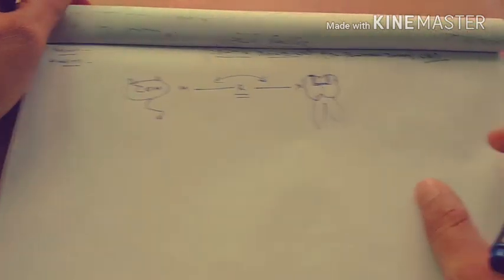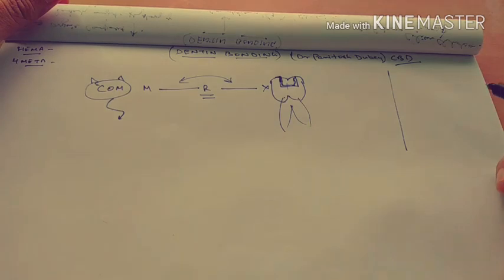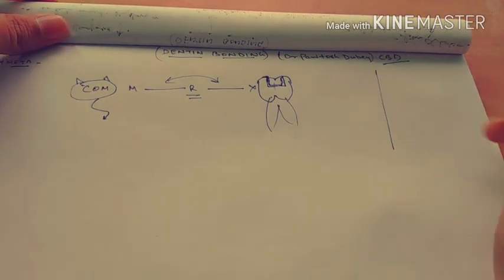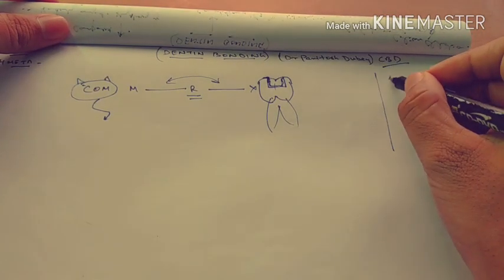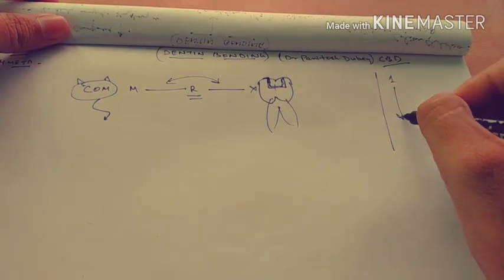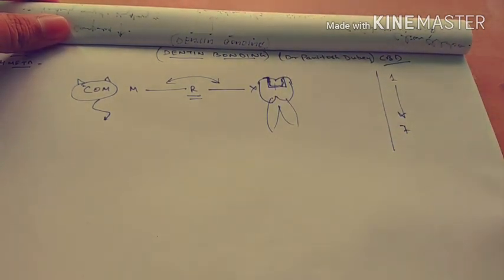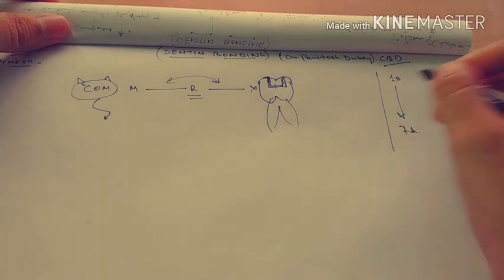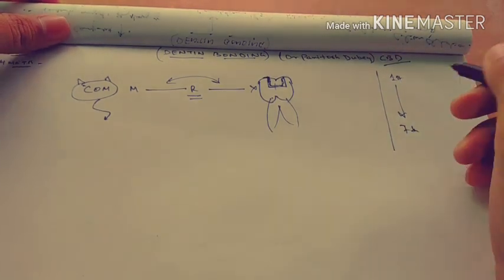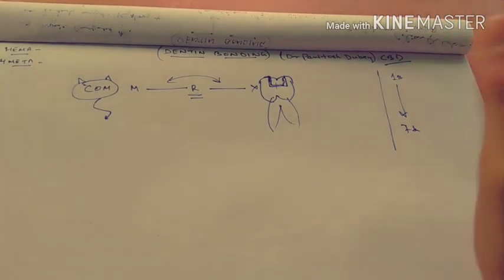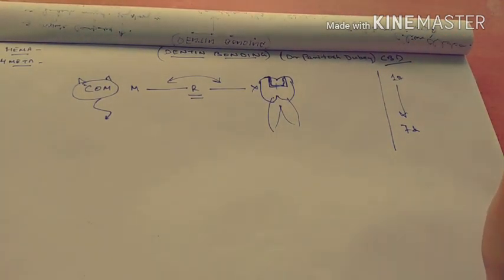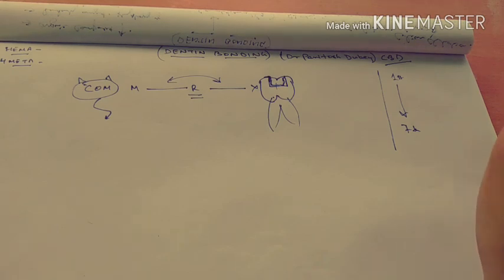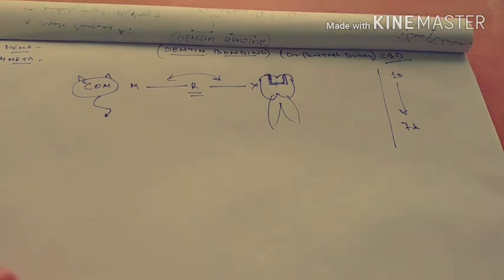Let me first tell you how many generations of dentin bonding agents there are. It is from first to seventh — seven generations. I'll tell you later on how to keep that in your memory, all those compositions from first generation all the way to seventh generation.